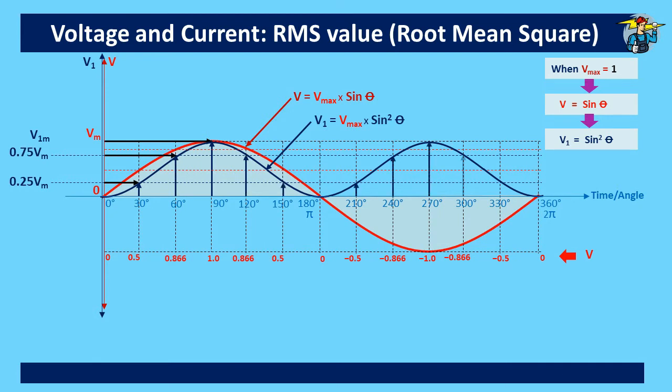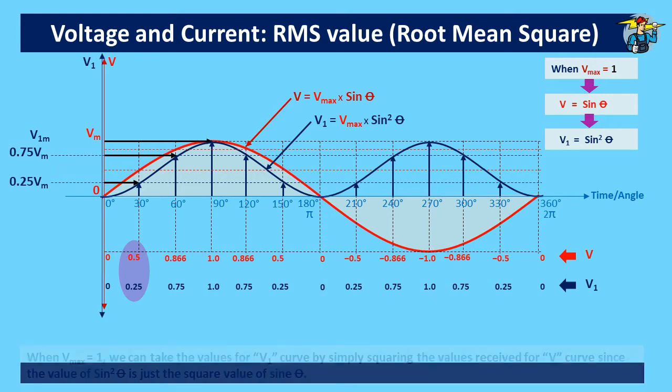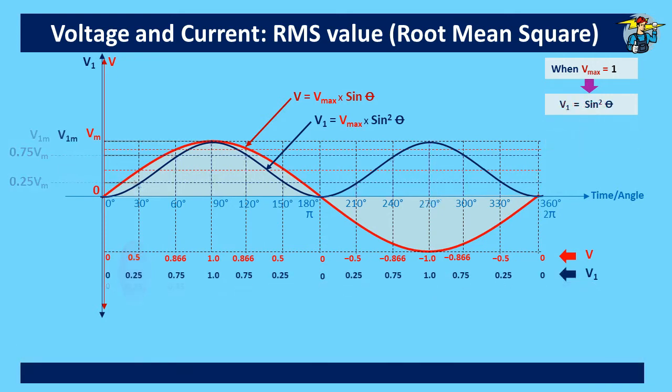Here sin² value can be taken by squaring the sine value at that particular angle. So we receive values for V1 related to the angles marked on the graph. You will see that V1 value is the square of the V value at that angle, and all the negative values have also become positive values now due to squaring. Let's consider the area covered by the new V1 curve which is on the positive side only.